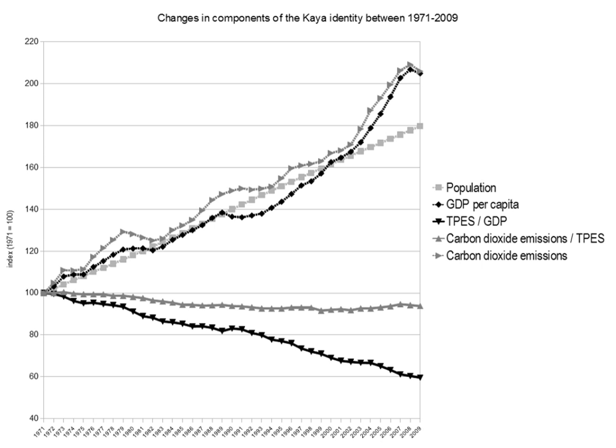Between 1971 and 2009, energy-related CO2 emissions grew on average by about 2.8% per year. Population grew on average by about 2.1% per year and GDP per capita by 2.6% per year. Energy intensity of GDP fell on average by about 1.1% per year, and carbon intensity of energy fell by about 0.2% per year.